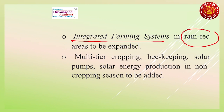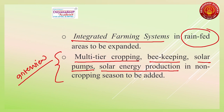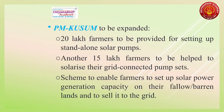Integrated farming systems will be developed in rain-fed areas. For interview answers, avoid very repeated and theoretical answers. Some innovative points include encouraging Indian farmers to go for multi-tier cropping, beekeeping, solar pumps, and solar energy production in non-cropping season. These are important and innovative examples to use.